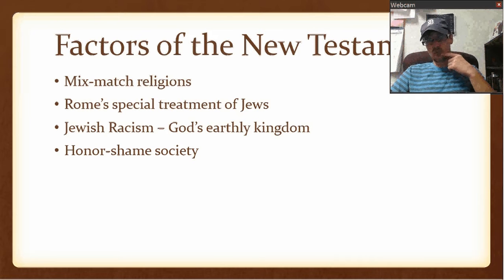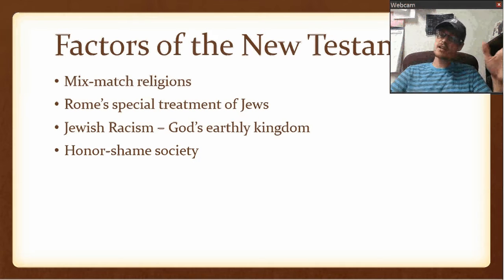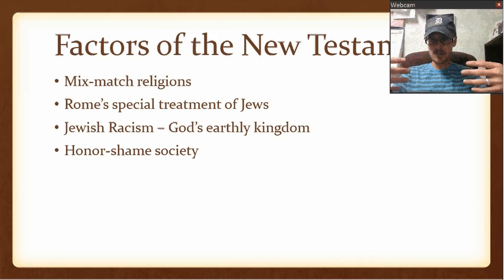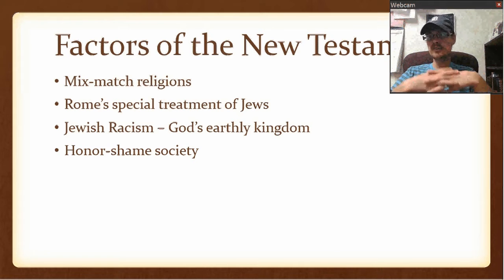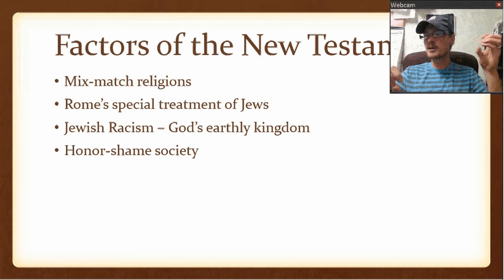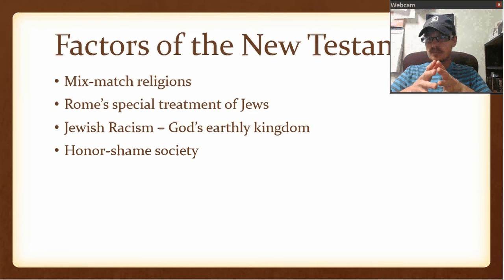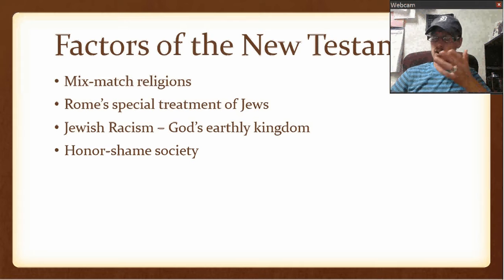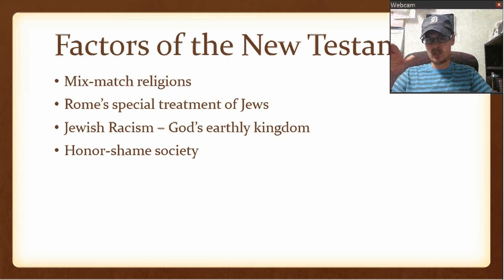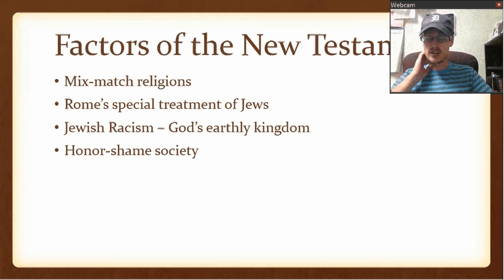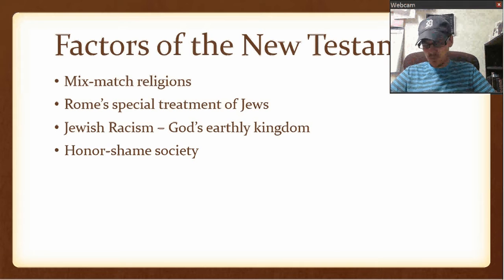Another thing to take into account is that at this time and place there was a very strong honor-shame society. In America, it's not really the case — you may feel guilt or shame, but then it passes. But at this time, honor and shame was a way bigger deal. To be rejected and bring dishonor on your family was really significant. We see this in the story of the prodigal son, where the father runs toward the son — a very dishonorable thing — and how the son demanded that money, basically saying, 'I wish you were dead.'